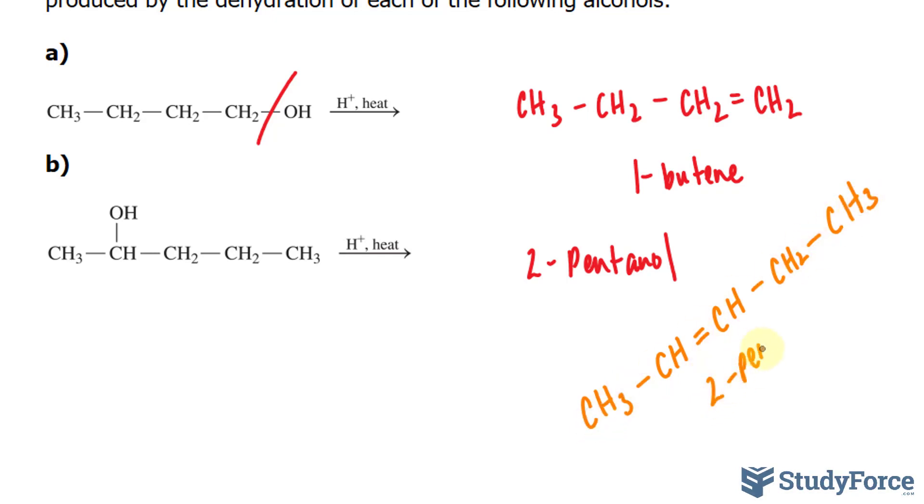So that's 2-pentene. But you'll also form a little bit of this minor product, where we have the double bond right here, CH2 double bonded to CH, and the rest of the molecule.